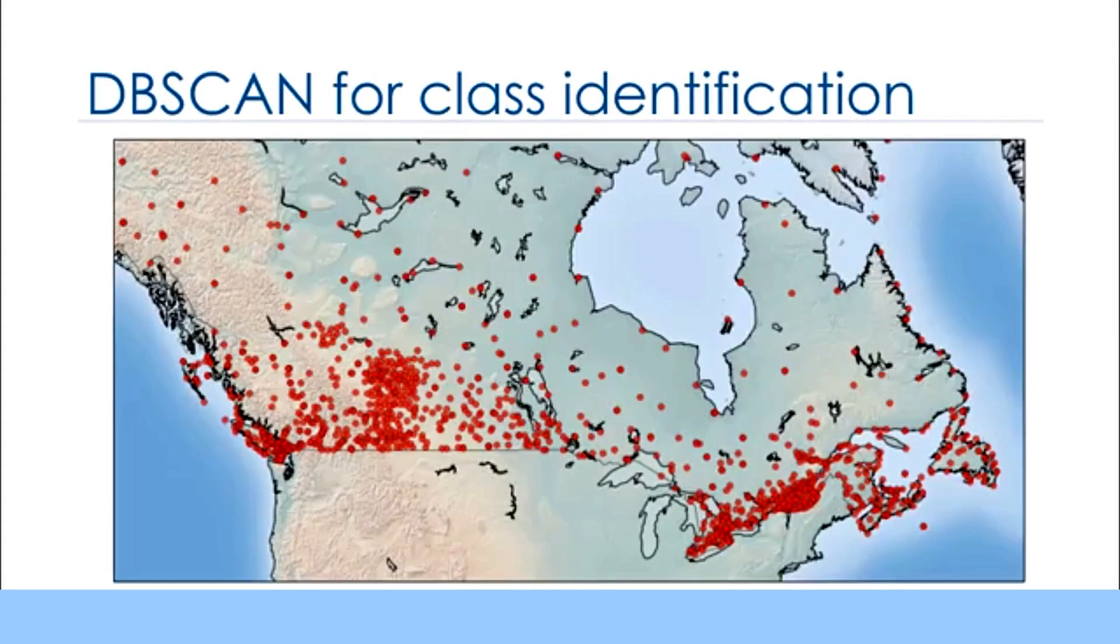DBSCAN is particularly effective for tasks like class identification on a spatial context. The wonderful attribute of the DBSCAN algorithm is that it can find out any arbitrary shaped cluster without getting affected by noise.